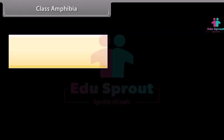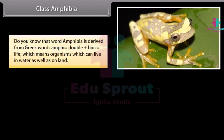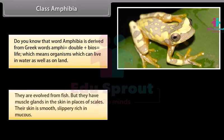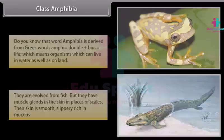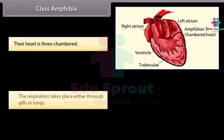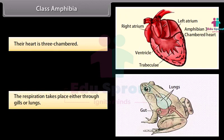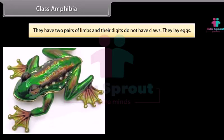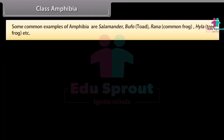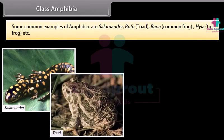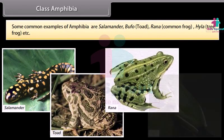Class Amphibia. The word Amphibia is derived from Greek words: Amphi, meaning double, plus Bios, meaning life — organisms which can live in water as well as on land. They evolved from fish but have mucus glands in the skin instead of scales. Their skin is smooth, slippery, and rich in mucus. Their heart is three-chambered. Respiration takes place either through gills or lungs. They have two pairs of limbs and their digits do not have claws. They lay eggs. Common examples are Salamander, Bufo (toad), Rana (common frog), and Hyla (tree frog).